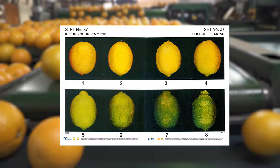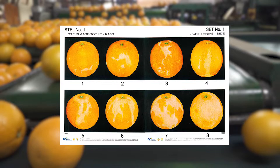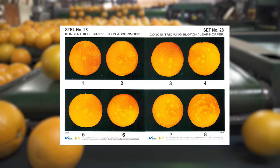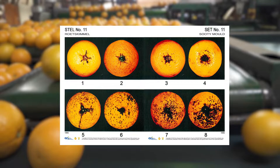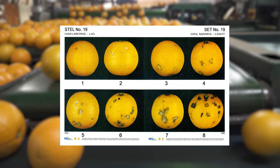Another external quality factor is damage caused by pests and diseases. This includes damage from insects such as thrips, red scale, rust mite, bollworm, mealybug and leafhopper. Pest insects also cause the growth of sooty mould, which is also considered pest damage. Disease damage of significance is caused by citrus black spot and alternaria brown spot. Wind scars, hail damage and frost damage are external quality factors caused by the weather, although frost damage is likely to cause more internal than external damage to fruit.